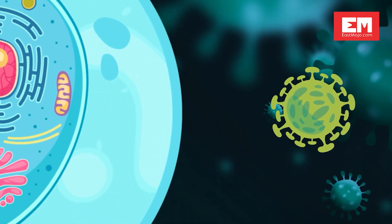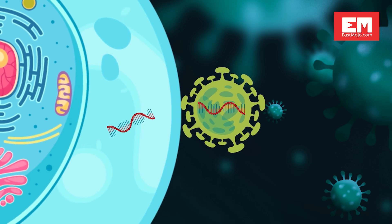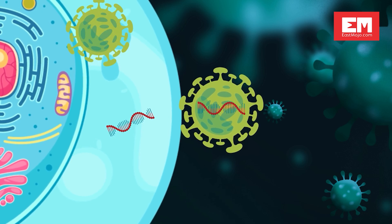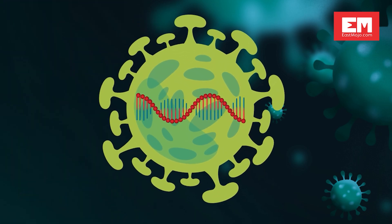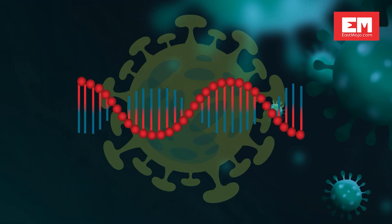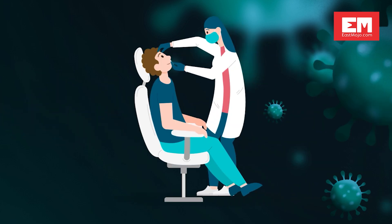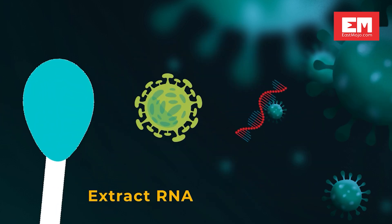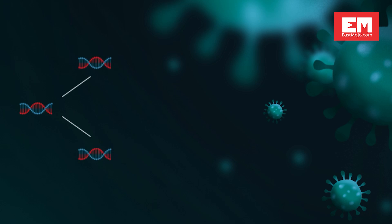When the virus causing COVID-19 attaches to a cell, it inserts a small piece of ribonucleic acid or RNA that forces the cell to make more copies of the virus. In order to detect the virus in a sample, we have to be able to isolate that unique piece of RNA. When you go for an RT-PCR test, your RNA is extracted from your swab, which is then converted into DNA. The DNA is then amplified to create multiple copies of the genetic material, which makes it easier to detect the virus if present.